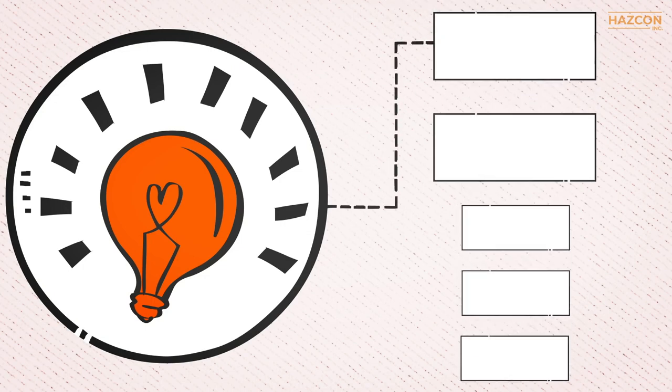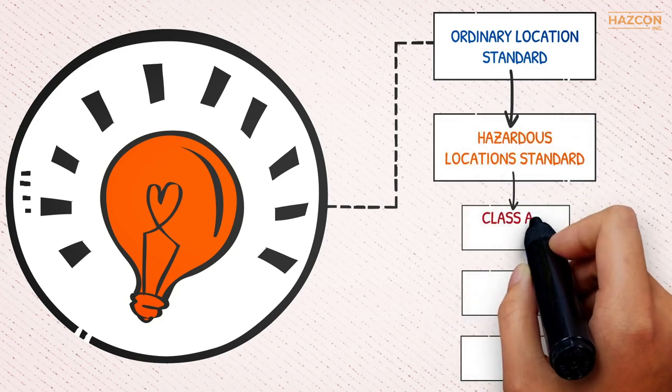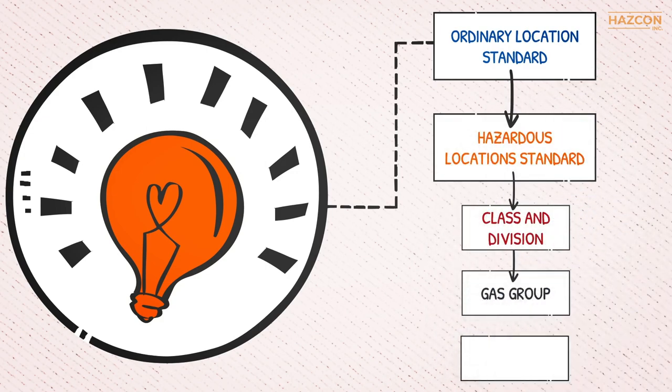The class and division, the gas group, and the T code must then be marked in accordance with the gas group with which the product is safe to use and the T class obtained from testing and evaluation.